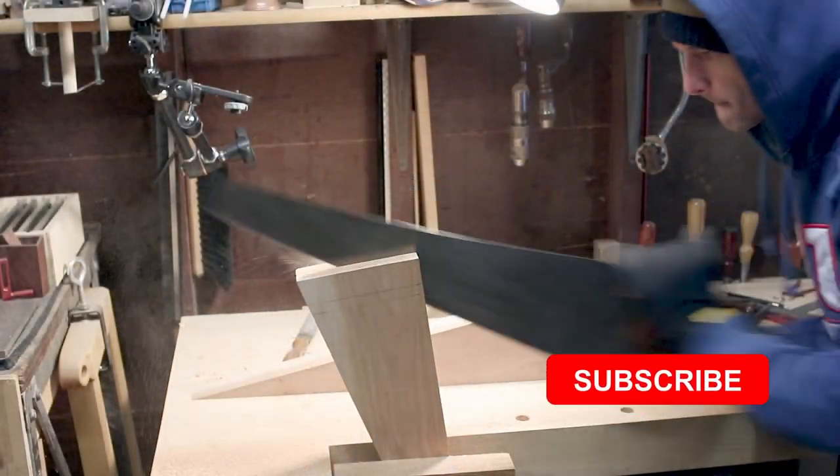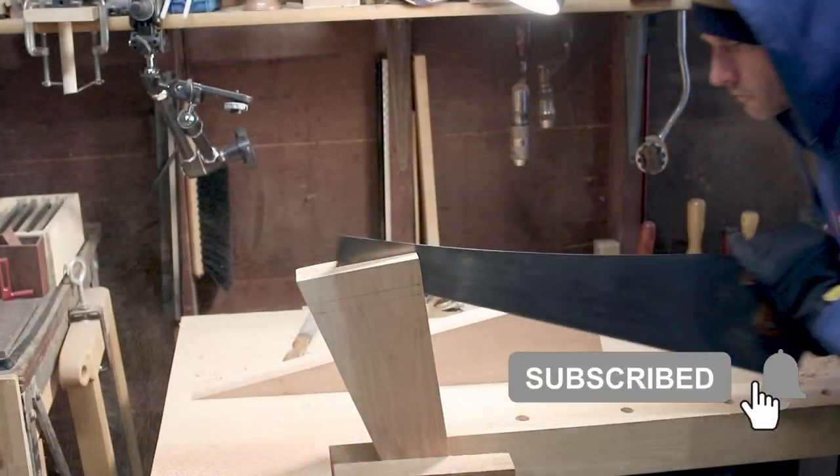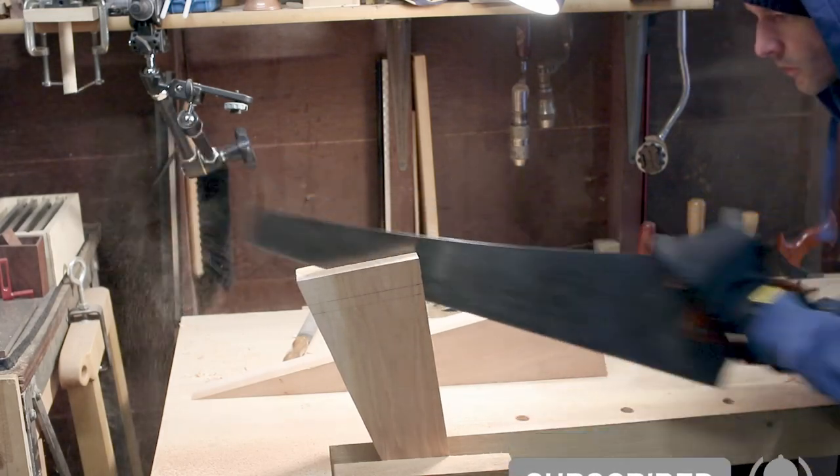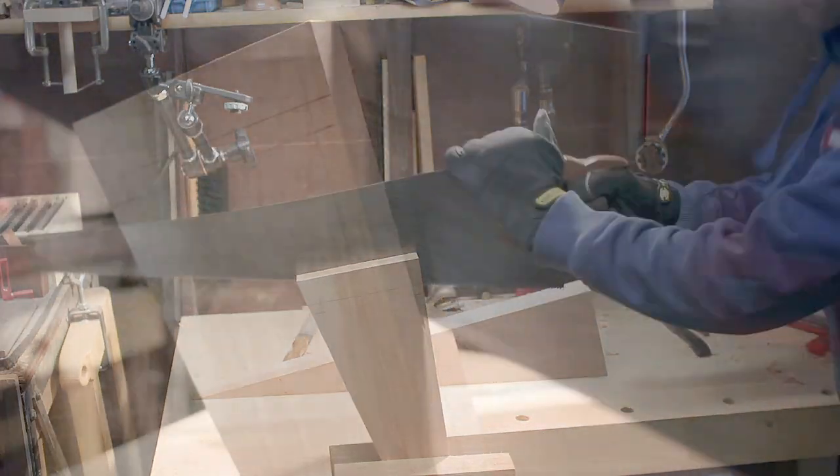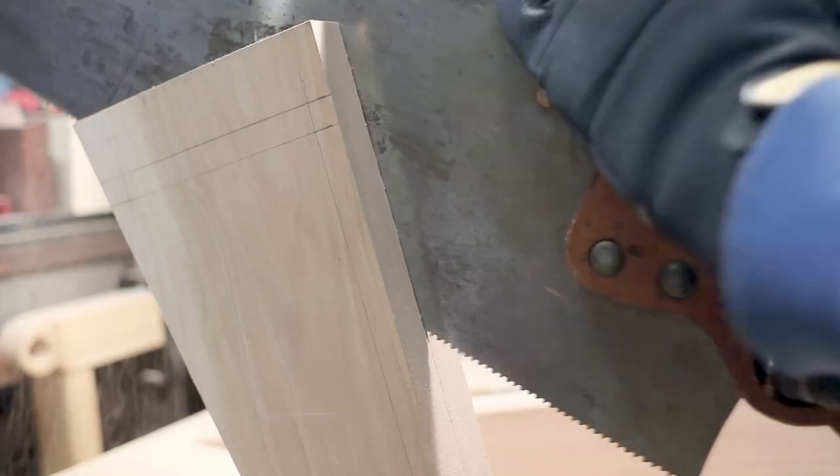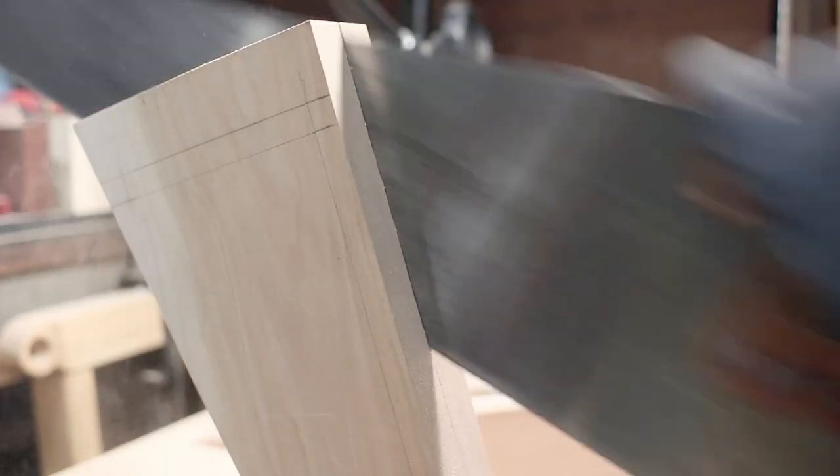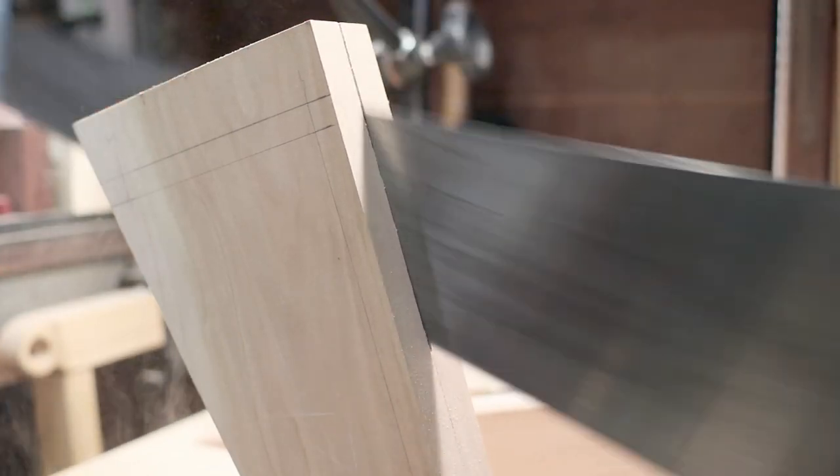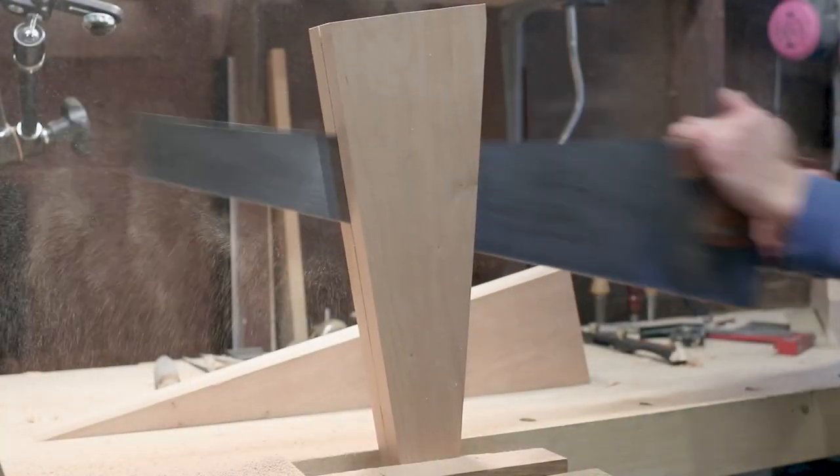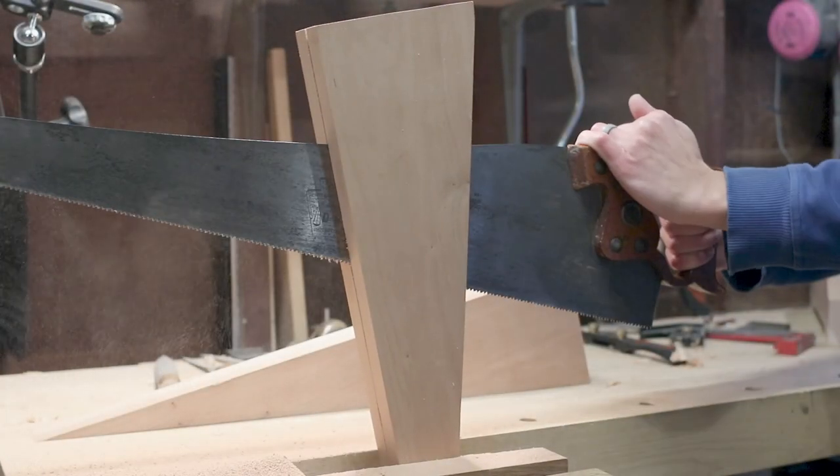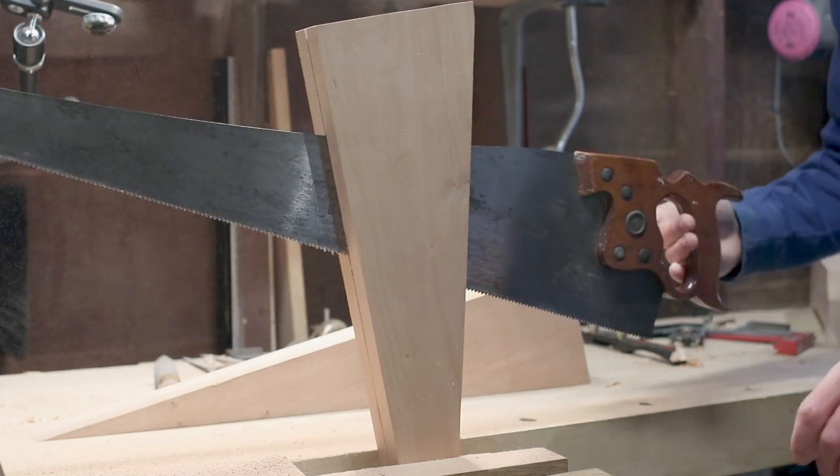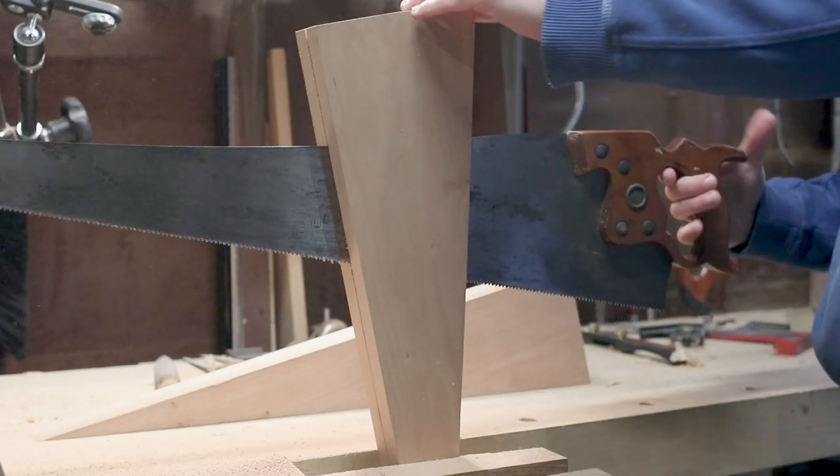Finally for this part, I'll re-saw the corner supports down at the bottom. I'm using 8/4 stock. The supports are only about 3/4 of an inch wide, so I re-saw two pieces. I'm just using a hand saw for this. It's a relatively short cut—doesn't take more than a few minutes. If it was any bigger, I'd bring out the big frame saw.